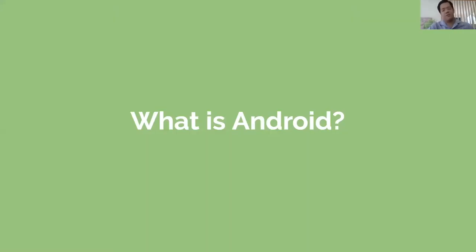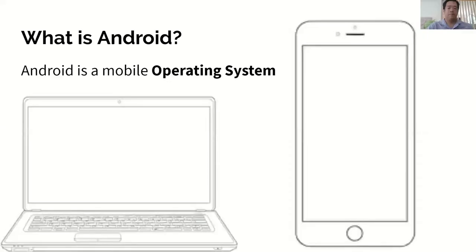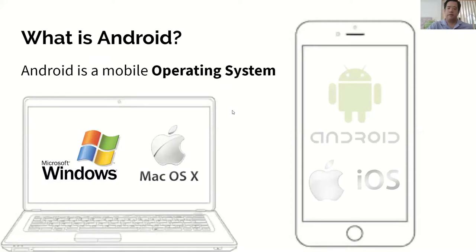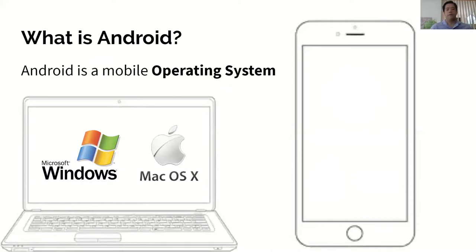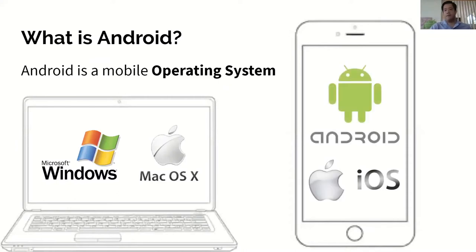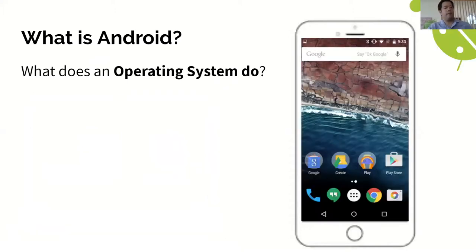Let's start with a very general question: what is Android exactly? On the very base level, Android is a mobile operating system. When you boot up a computer, the first thing you'll see is a Windows icon or a Mac OS X icon — those are the operating systems that run computers. On phones, Android and iOS are the equivalent.